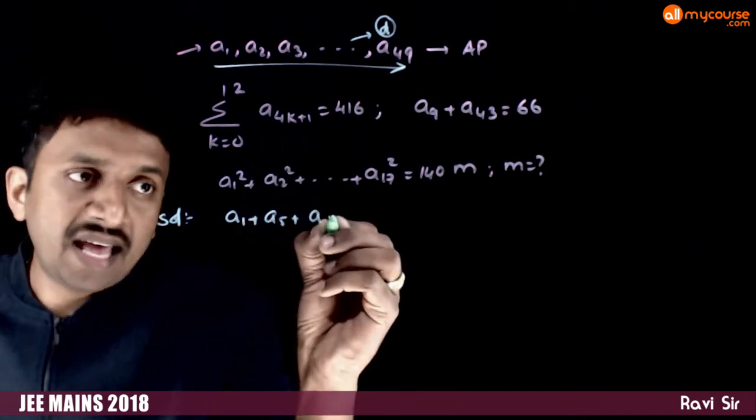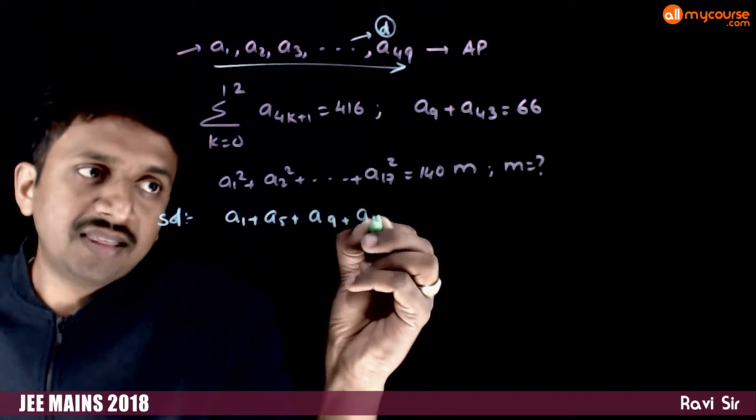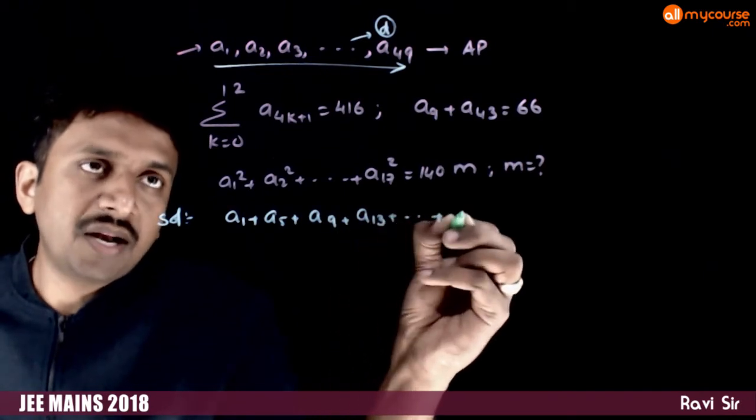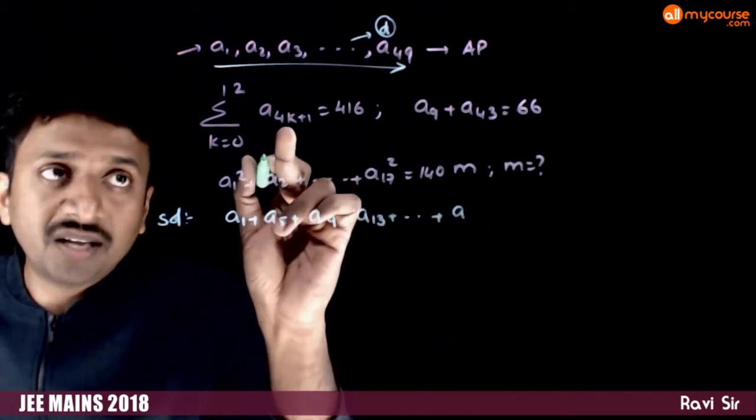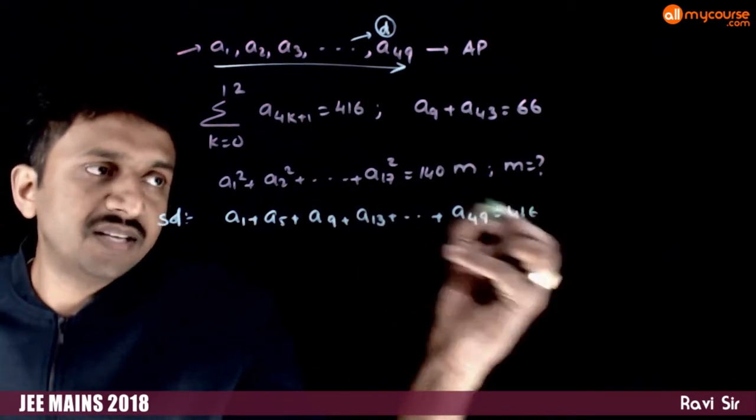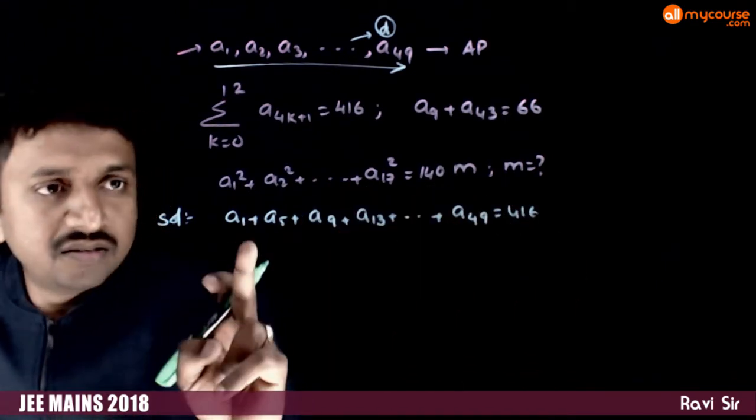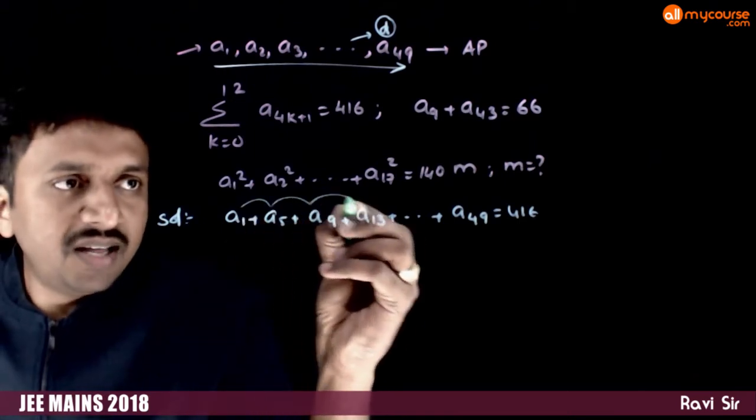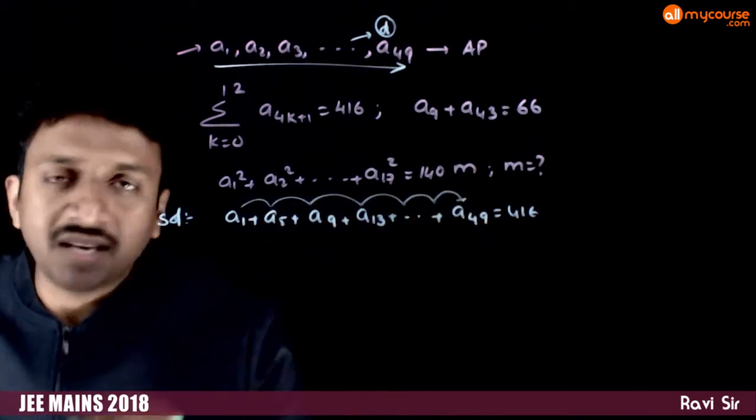a9 plus a13 plus so on up to, if you put k equal to 12, a49 is equal to 416. As you can see, these are evenly placed numbers in an AP.